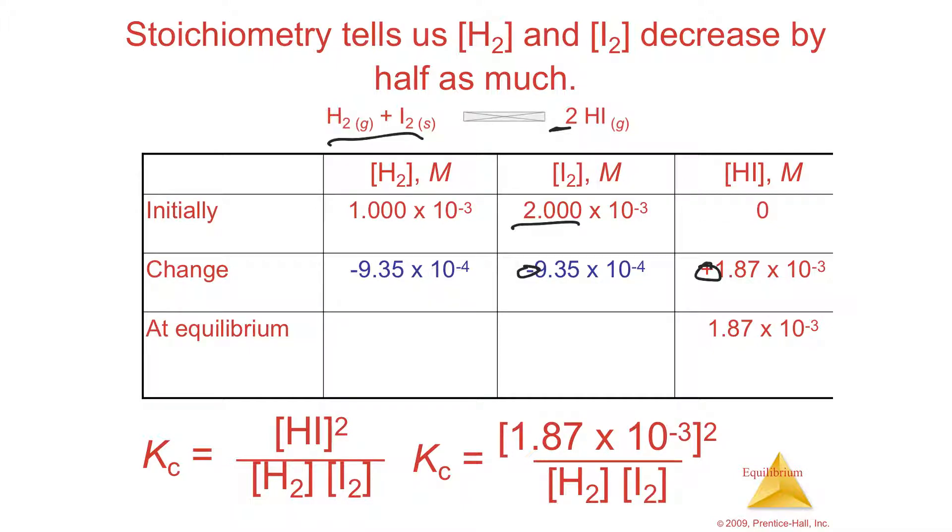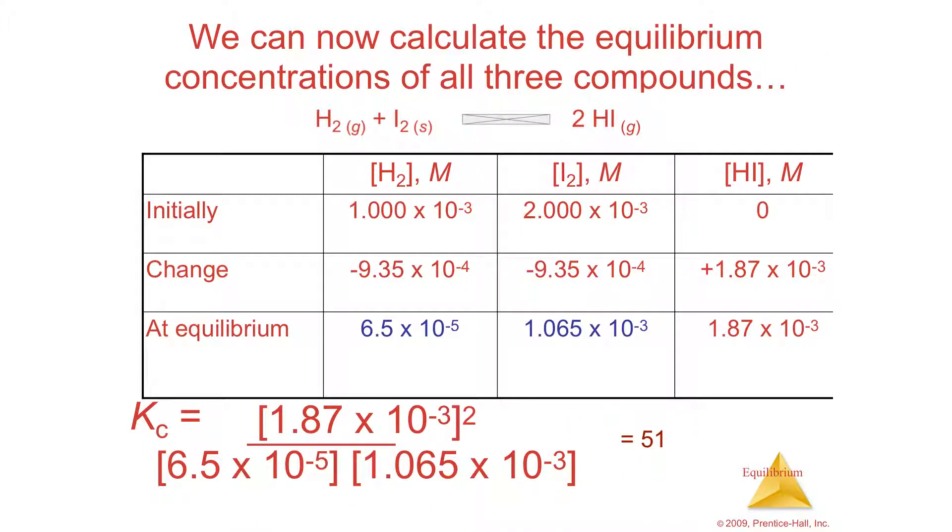Now, I still, on the bottom, can't fill anything in yet, because I don't have its equilibrium yet, but all I have to do is subtract it from the initial concentration, and I'll have it. So, when I do the subtraction, let's take the hydrogen first. 1 times 10 to the negative 3 minus 9.35 times 10 to the negative 4 yields 6.5 times 10 to the negative 5. So, I put that here. That's my concentration of the H2. I'm going to do the same thing. 2 times 10 to the negative 3 minus 9.35 times 10 to the negative 4 yields 1.065 times 10 to the negative 3. That's the concentration of the I.